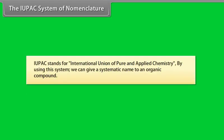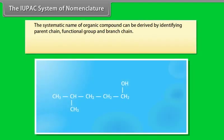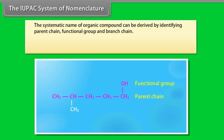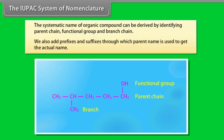IUPAC stands for International Union of Pure and Applied Chemistry. By using this system, we can give a systematic name to an organic compound. The systematic name of an organic compound can be derived by identifying the parent chain, functional group, and branch chain. We also add prefixes and suffixes to the parent name to get the actual name.